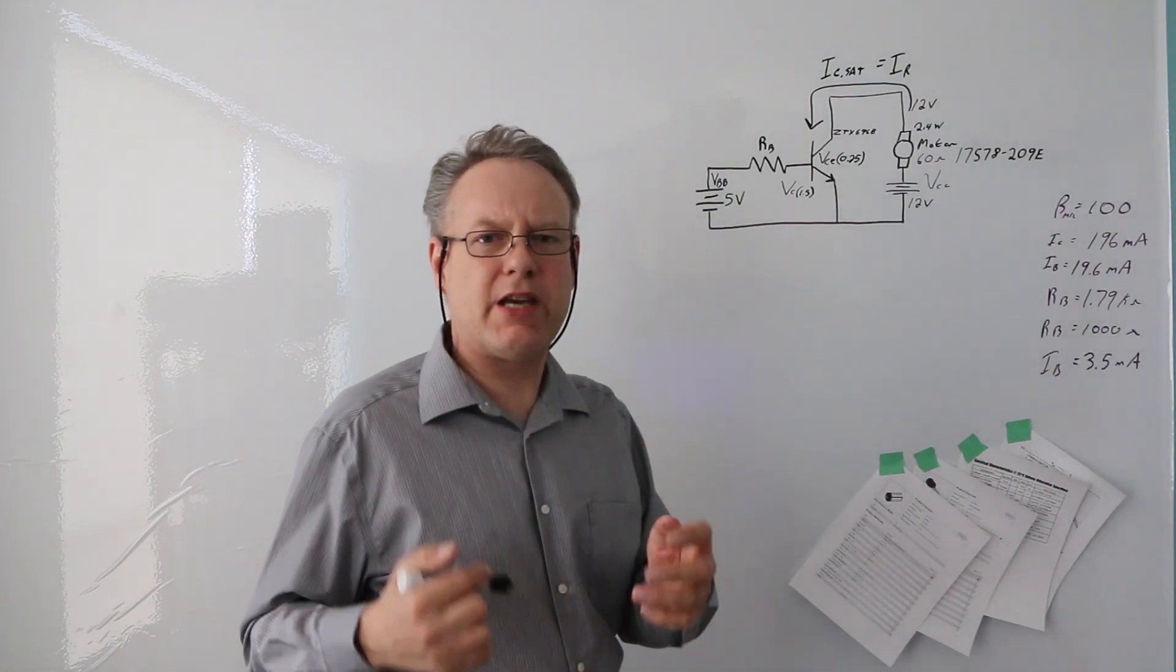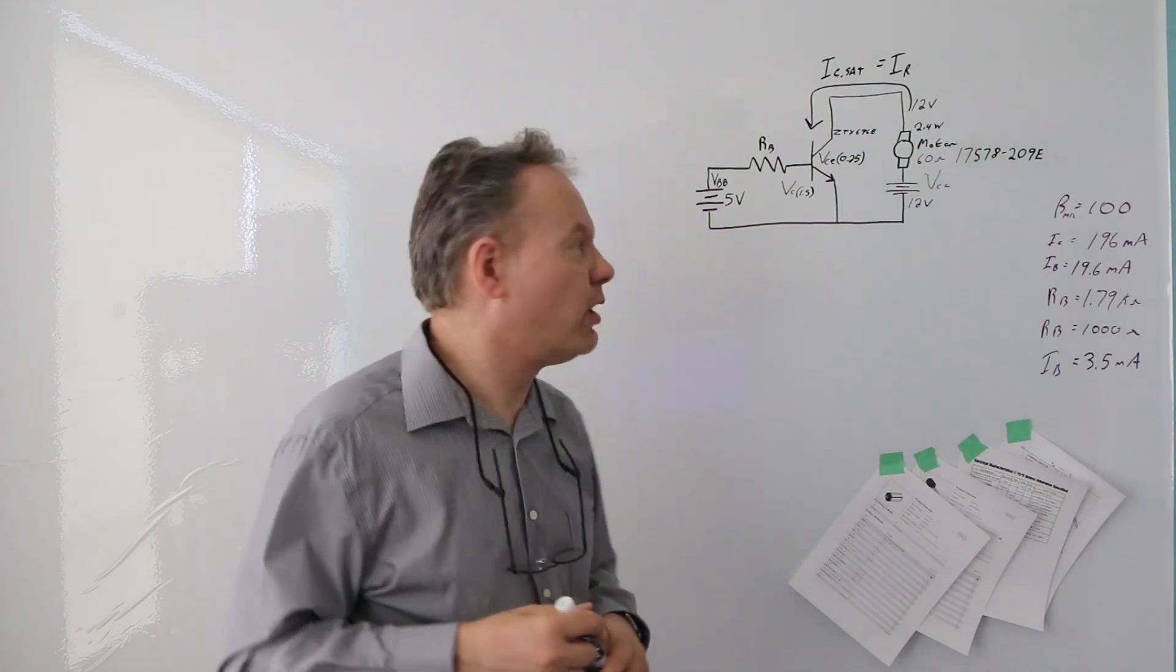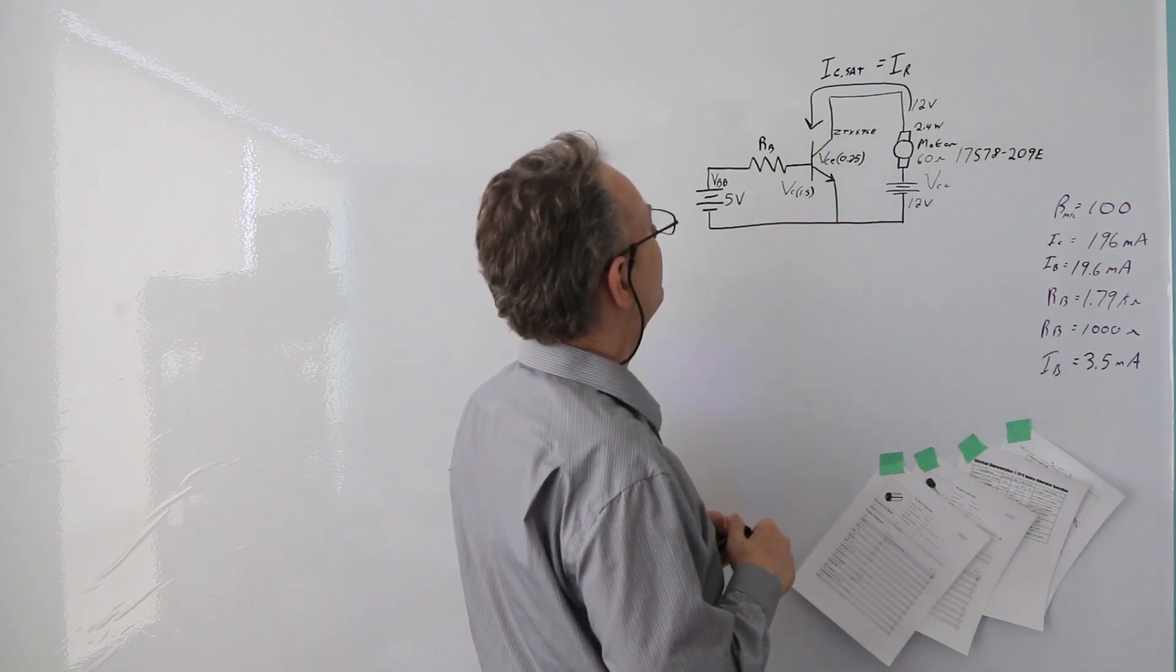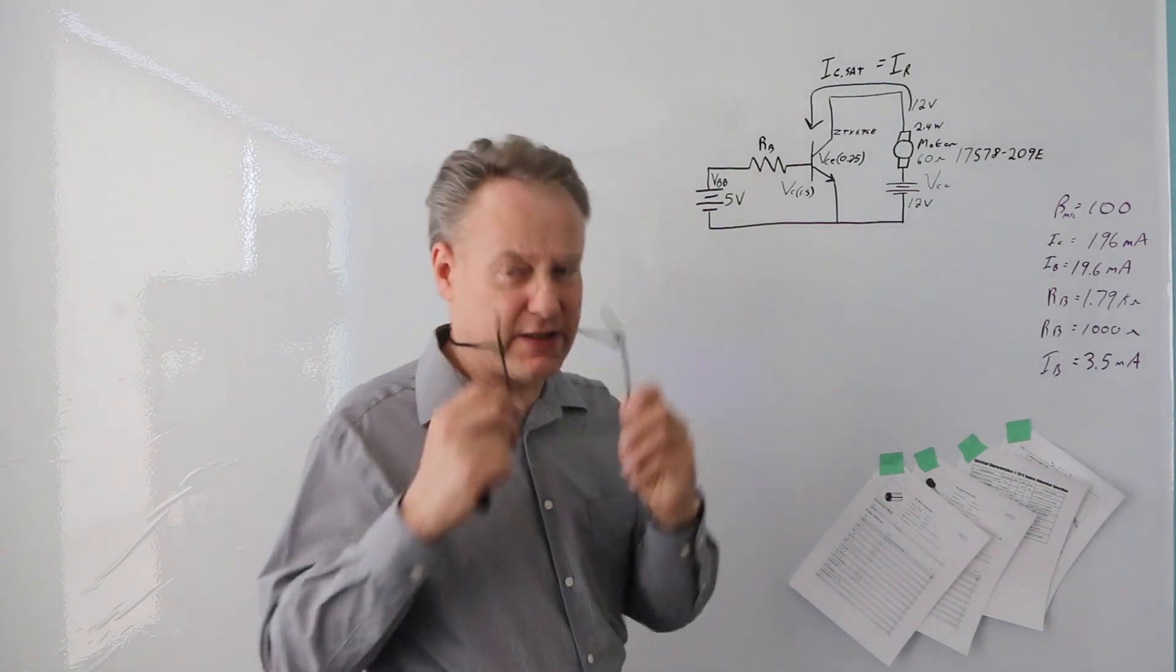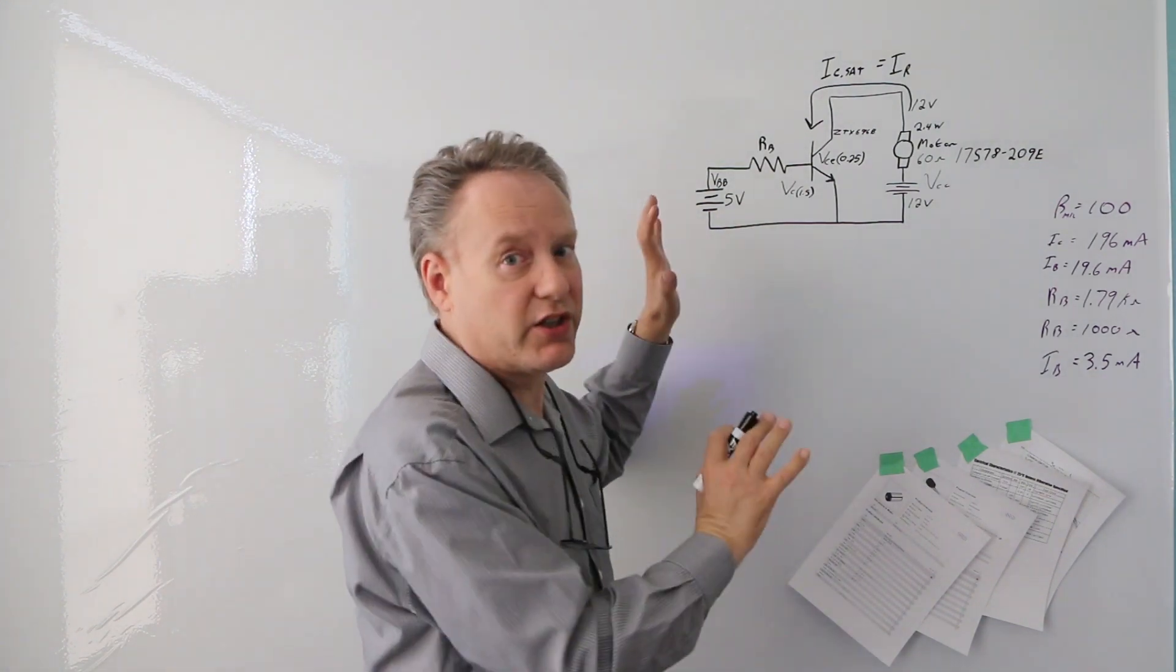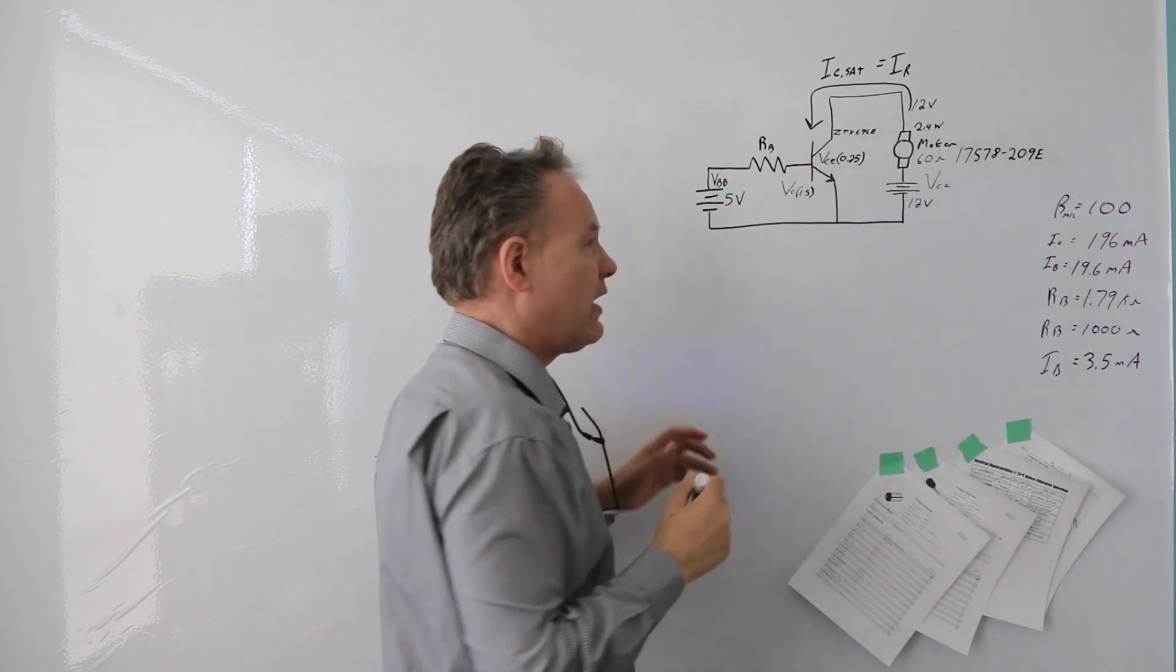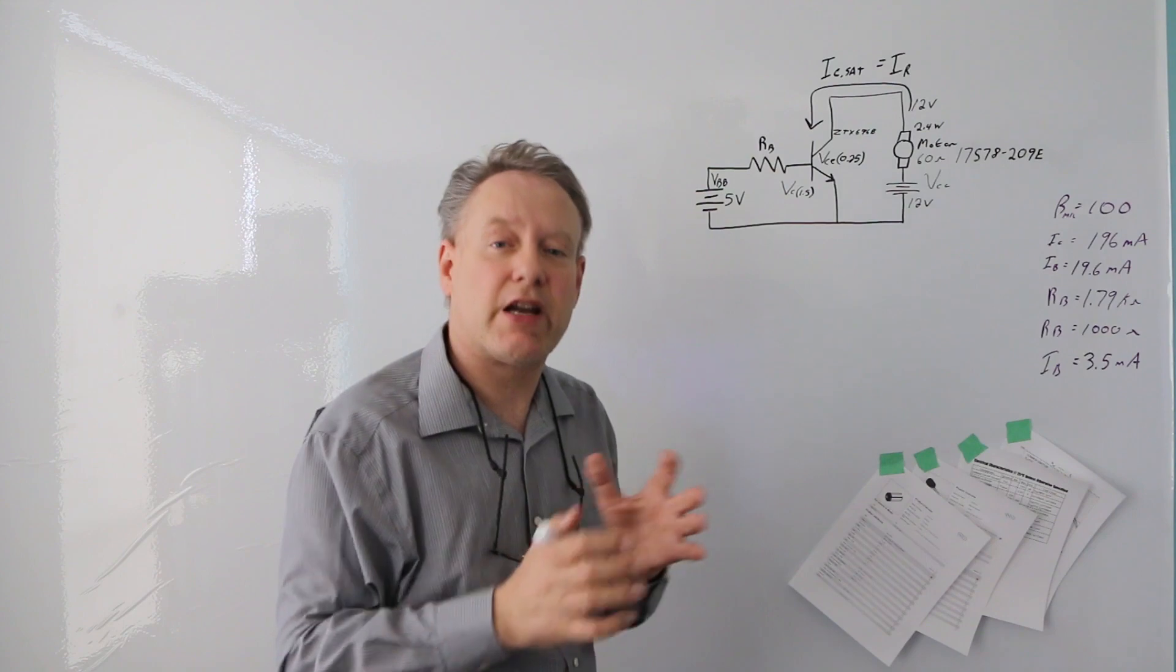Let's go over a BJT application as a switch. We're going to drive a small motor and we'll use this BJT here. It's an NPN and it's a ZTX696B. We'll talk about why I chose that for this application, but first let's just look at the circuit. We've got this current going through the motor and through the BJT, and when we use it as a switch we know the BJT is going to be working in saturation.